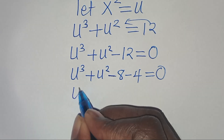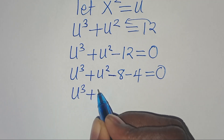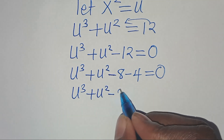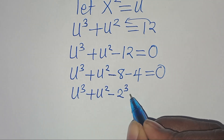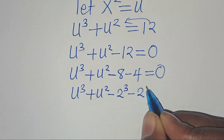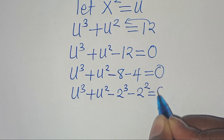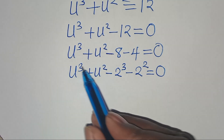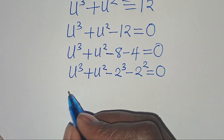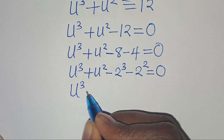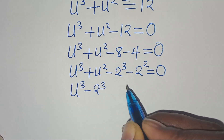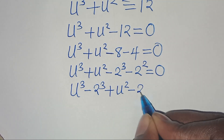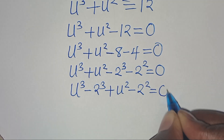We recognize that 8 is 2³ and 4 is 2². So we rewrite the equation as u³ - 2³ plus u² - 2² equals 0, grouping into two recognizable algebraic forms.